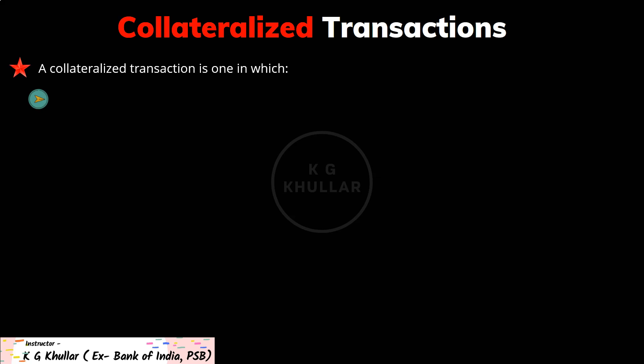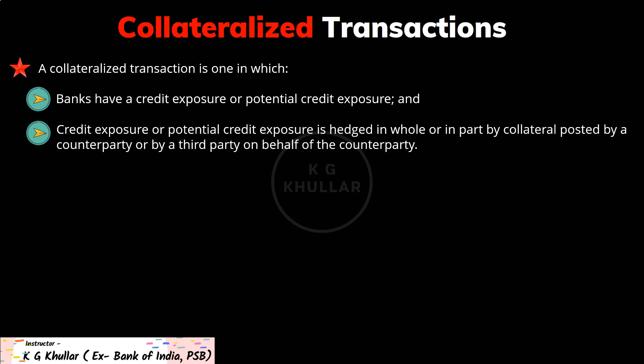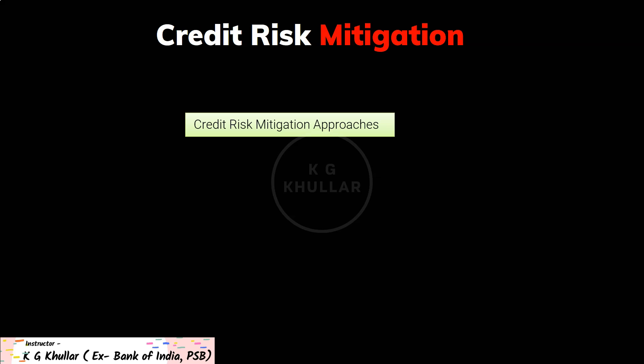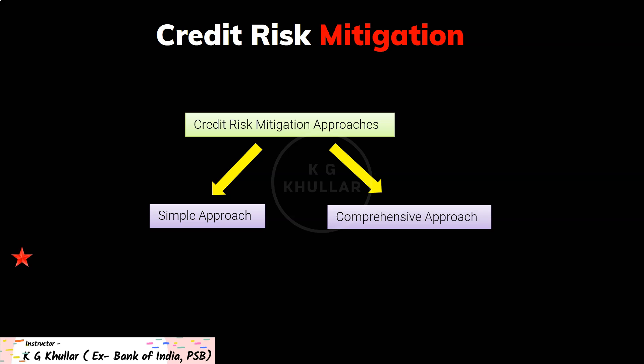A collateralized transaction is one in which first a bank has a credit exposure or potential credit exposure, and second that credit exposure or potential credit exposure is hedged in whole or in part by collateral posted by a counterparty or by a third party on behalf of the counterparty. Banks use a number of techniques to mitigate credit risk. For example, exposures may be collateralized by first priority claims with cash or securities, a loan exposure may be guaranteed by a third party, or a bank may buy a credit derivative to offset various forms of credit risk.